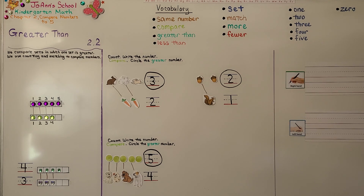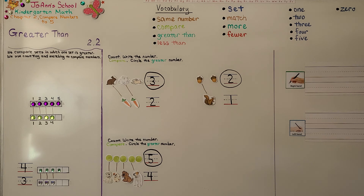So we can use lines to match the counters or objects to see which set has more, or we can count the number of objects in each set and compare the numbers. The greater number comes later in counting order. Our next lesson, 2.3, we're going to talk about less than. I hope you're doing well and have a great day — join me next time!